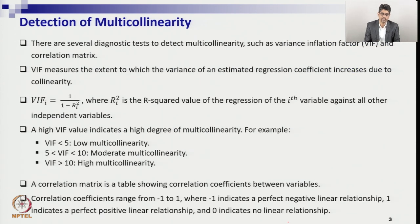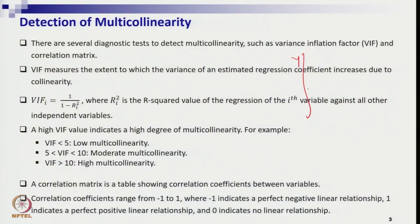In order to handle multicollinearity, first you need to understand its level. For example, suppose you have y, x1, and x2 as data sets, and x1 and x2 are linearly dependent with a high correlation coefficient. In that case, there is multicollinearity. To measure its level, there is a formula called Variance Inflation Factor (VIF). VIF is calculated as 1 divided by (1 minus R-squared).